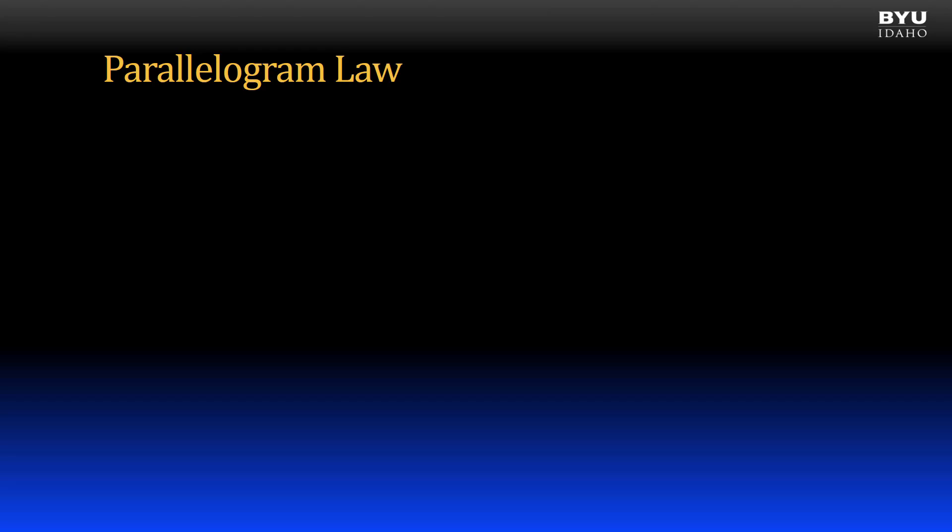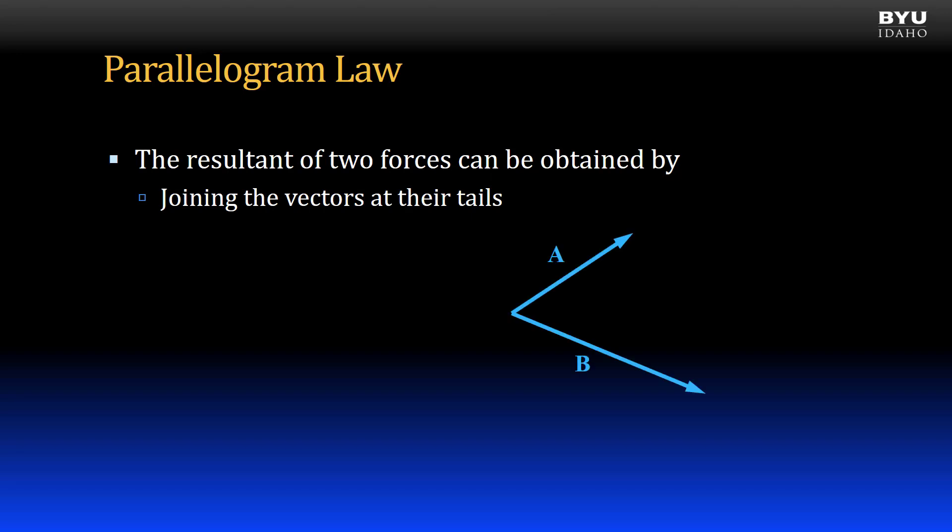A vector resultant can be thought of as the vector created by the sum of two or more vectors. The resultant can be obtained using the parallelogram law by first joining the vectors at their tails graphically, as I show here with vectors A and B.